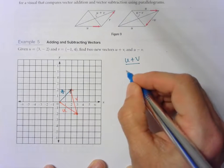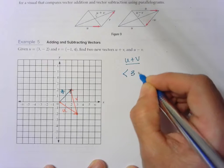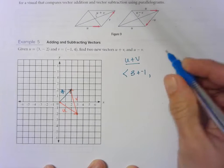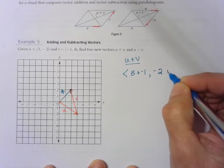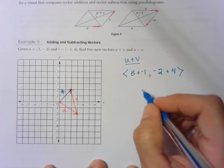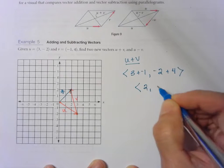So we have 3 plus negative 1, and negative 2 plus 4. We end up with <2, 2>.